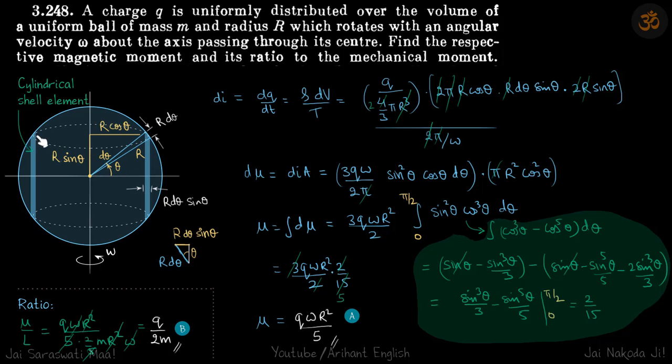So this time we will take a cylindrical element because for all these circles on the cylindrical element, magnetic moment will be same. So it will simplify our calculations if we take the element in a cylindrical fashion.